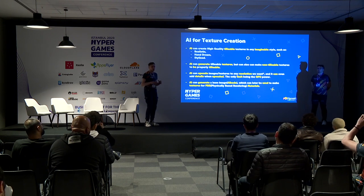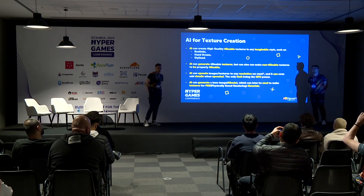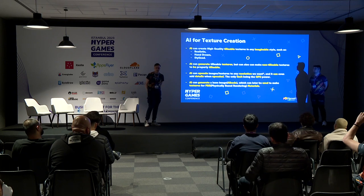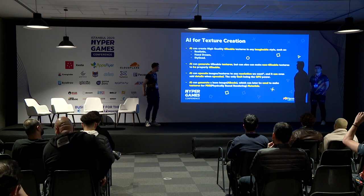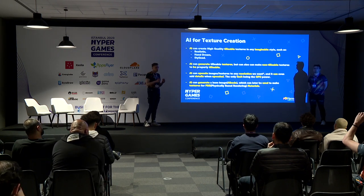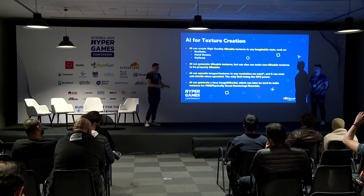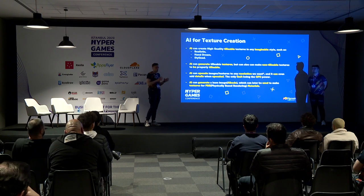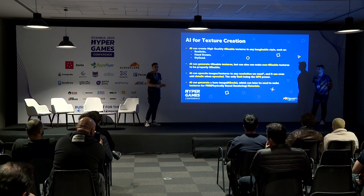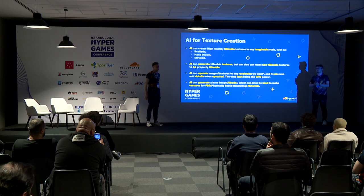Now we're going to talk about using AI to create art-based assets. AI can help you create high-quality textures that are tileable and can be in any style you need — realistic, hand-drawn, or stylized for 3D games. AI can also generate tileable textures from images that are not tileable. For example, if you have a ground texture showing seams in the game, you can tell AI to take that image and make it tile, and it will recreate the same texture with the seams removed, which saves a lot of time.